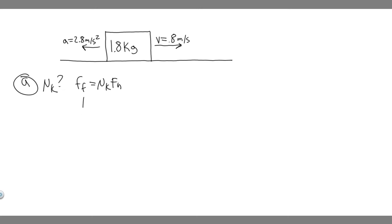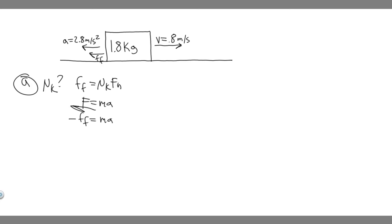We know force equals mass times acceleration — the net force. In this problem, there's only going to be one force in the x direction. In the direction the block is traveling, the only force is the force of friction slowing it down, which means the force of friction equals mass times acceleration. The signs are both negative, so they cancel out — basically, the force of friction equals mass times the acceleration of our object.